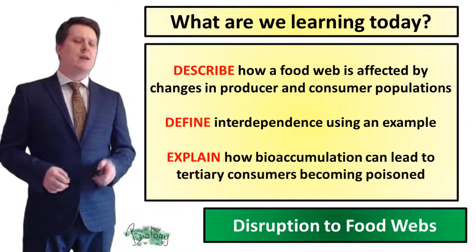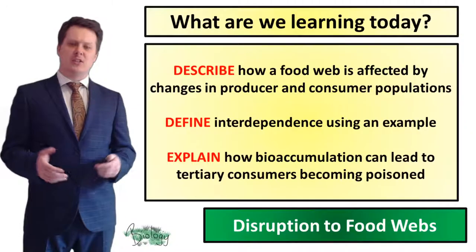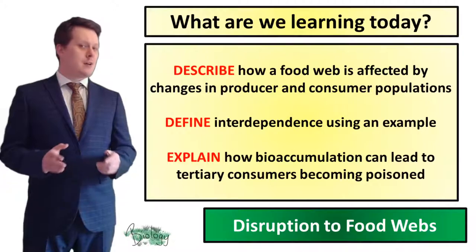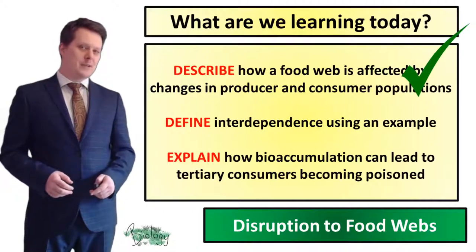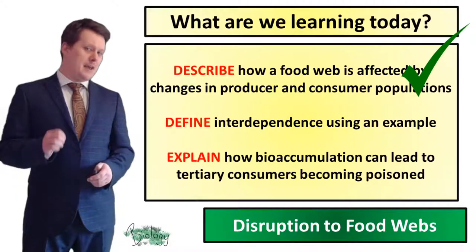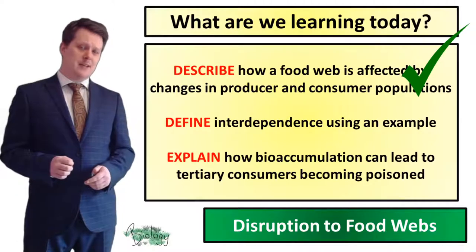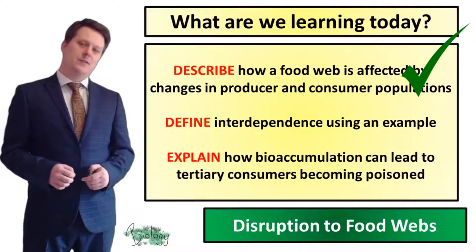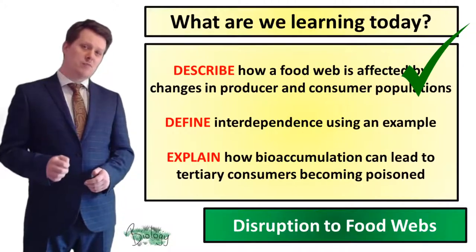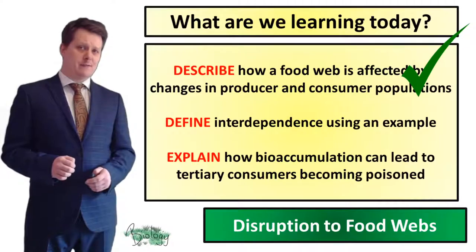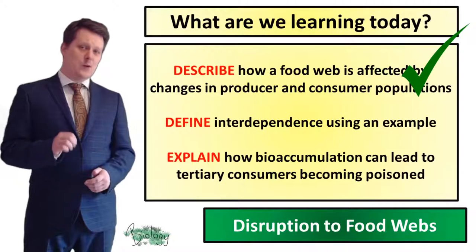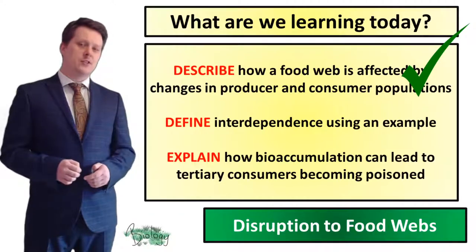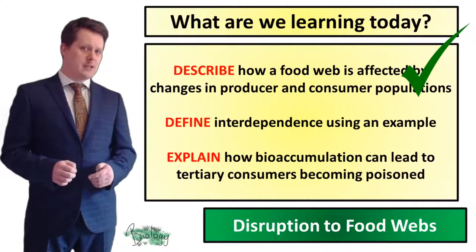So now we have described how a food web is affected by changes in producer and consumer populations. If a producer population is affected it can be devastating for the rest of the food web. If a consumer population is affected it will affect the food web, but eventually the populations of all the other organisms will become stable.